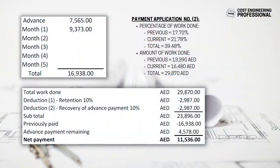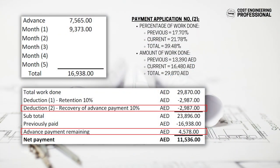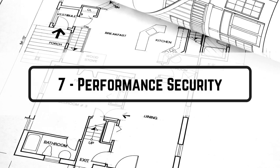Term number six is recovery of advance payment. If there is an advance payment in the contract, how is it going to be recovered? Usually the same percentage of the advance payment is deducted from the total work done in each payment certificate. A detailed example with numbers is covered in the video on the channel called 'How to Prepare Payment Application for a Complete Project.'